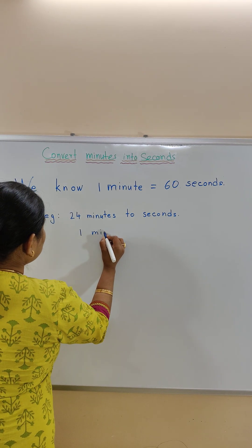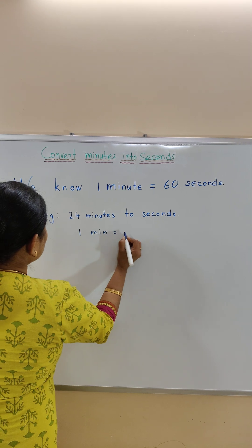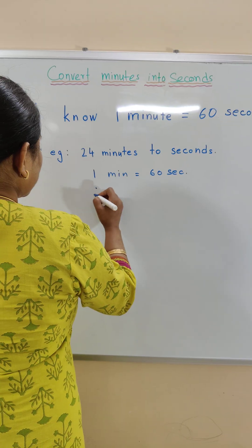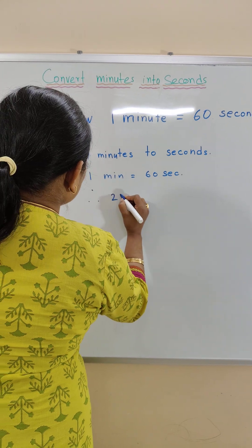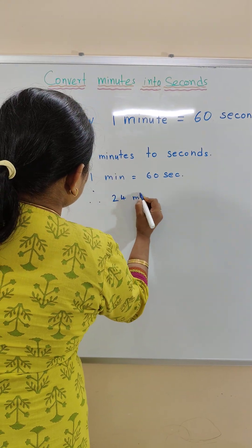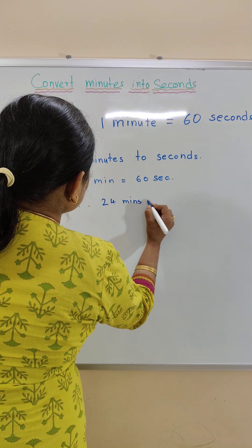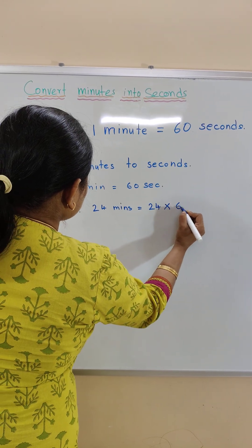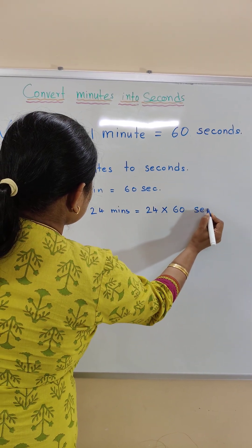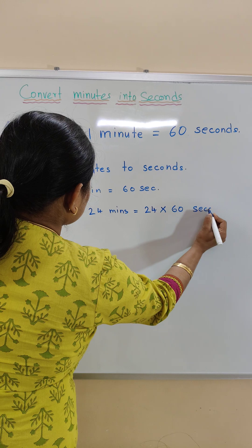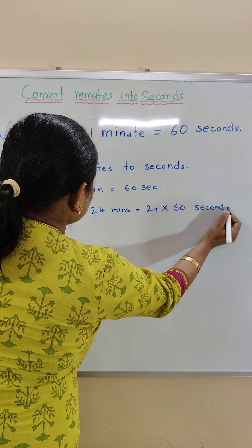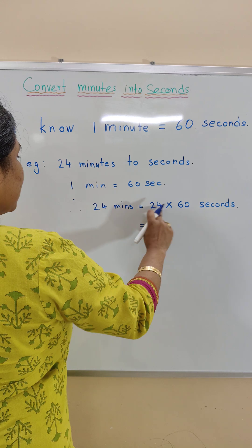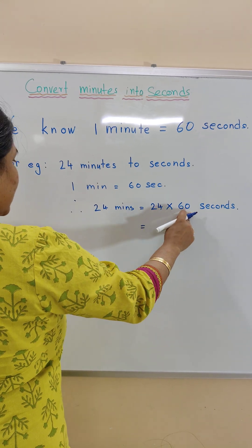First, let's write: one minute is equal to 60 seconds. Therefore, 24 minutes is equal to 24 times 60 seconds. Now we need to multiply 24 times 60.